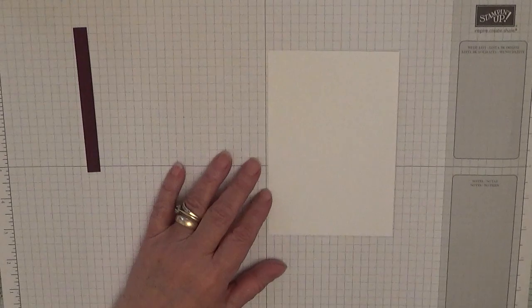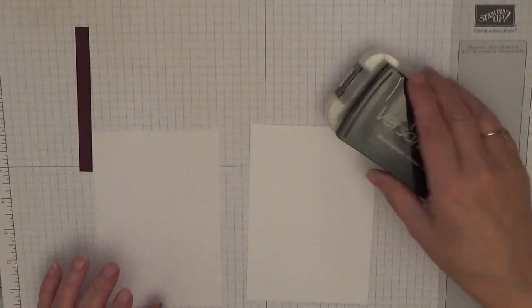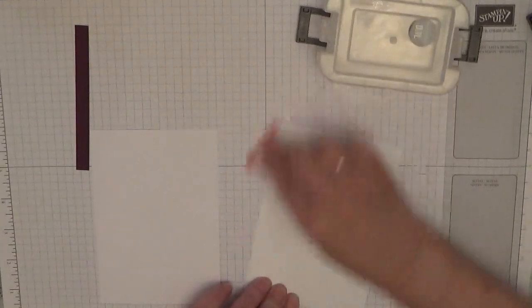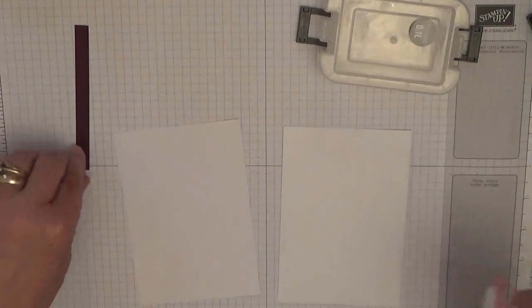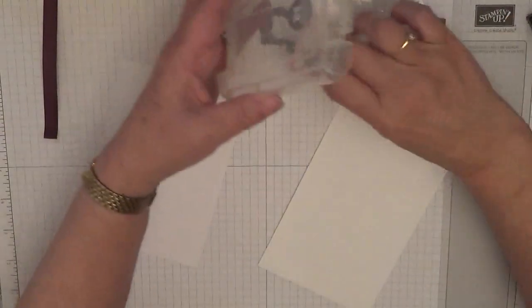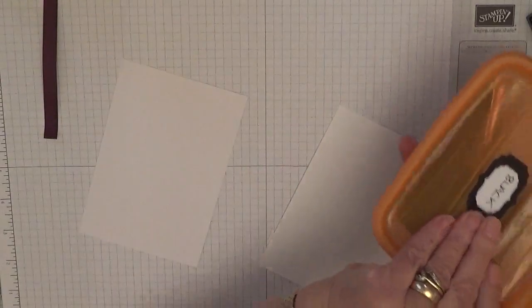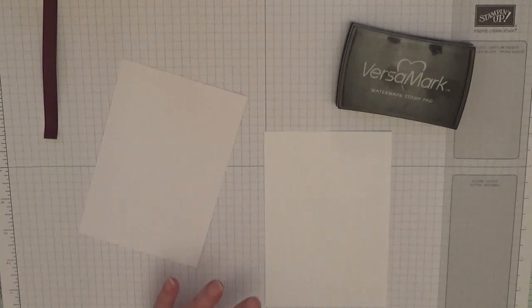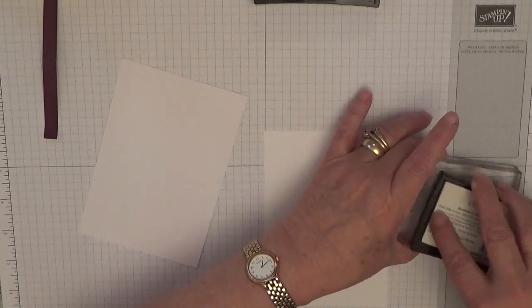We will need to emboss the front. You'll also need some scrap of white to do the flowers, which I've got here. So to start with, let's do our embossing. First we need our embossing buddy and emboss the front, and also emboss the scrap and the bit I'm going to do the sentiment on. Bring our black embossing powder ready, got our Versamark.